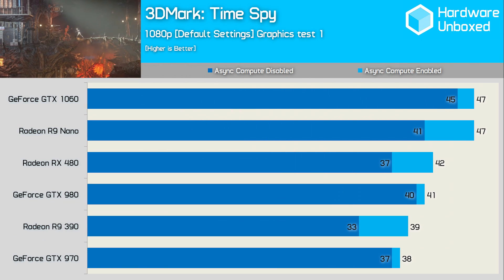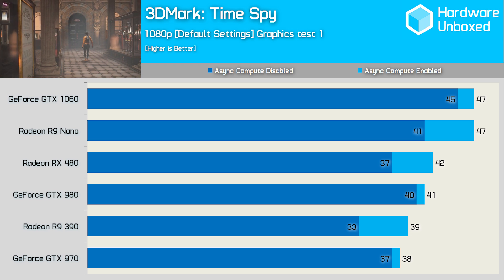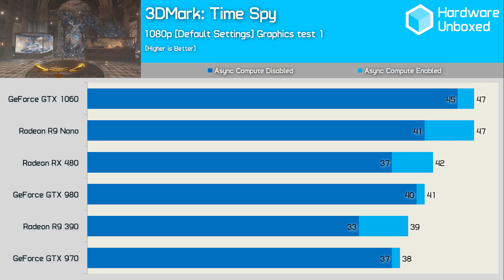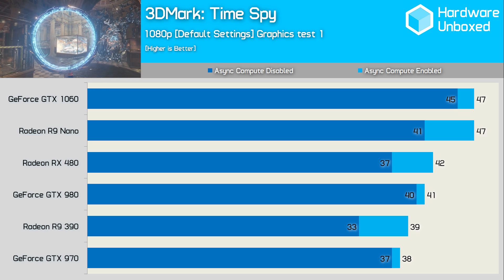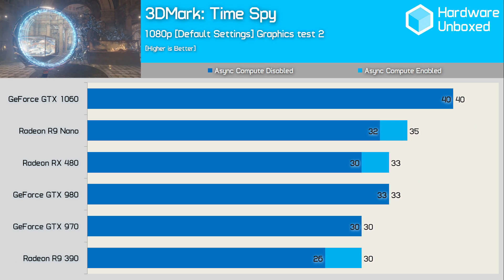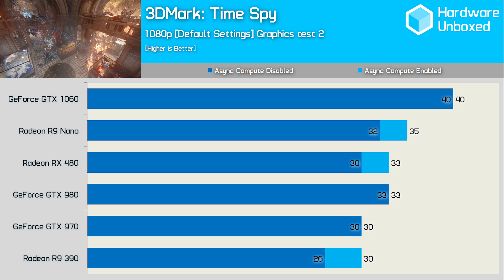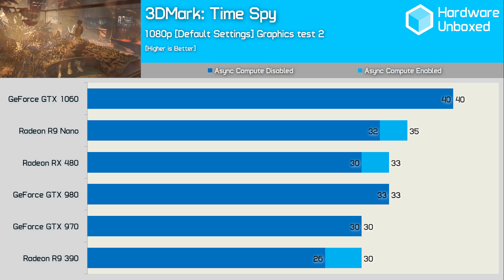So what about 3DMark's new DirectX 12 Time Spy synthetic benchmark, which allows us to enable and disable Async Compute in two GPU tests? Looking at the first graphics test, the GTX 1060 is indeed faster with Async Compute enabled, albeit by just 4%. The RX 480, however, was 14% faster with Async Compute enabled, though in this test it was still 11% slower than the GTX 1060. There's no denying that AMD's hardware support for Async Compute does give them a performance advantage here. The second Time Spy graphics test shows different trends — the GTX 1060 was no faster or slower with Async Compute disabled, while the RX 480 was 10% faster with Async Compute enabled, though this was a mere 3 FPS gain.